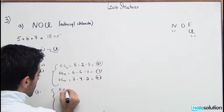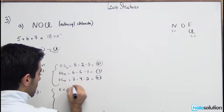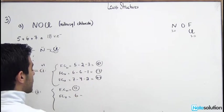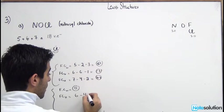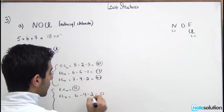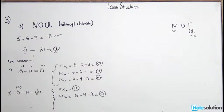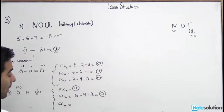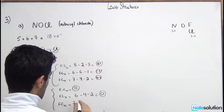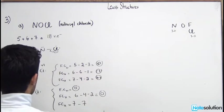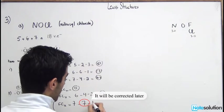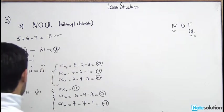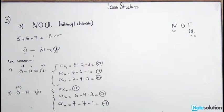For scenario two (double bond N–O): the formal charge of N stays at 0. For O: 6 − 4 − 2 = 0. For Cl: 7 − 7 − 1 = −1. So formal charges are: N = 0, O = 0, Cl = −1.